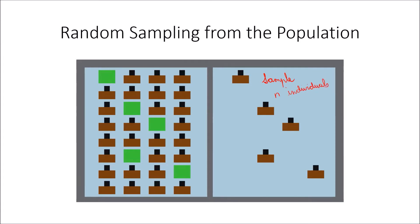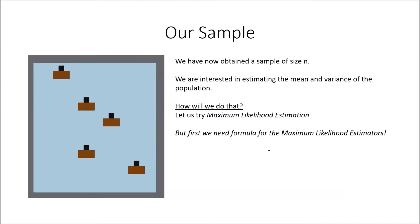Now that we have obtained our sample of size n, we're interested in estimating the mean and variance of the population. There are many ways to do that — for example, sample mean and sample variance. Those are valid estimators, but in this video we are talking about maximum likelihood estimation. So, what are the maximum likelihood estimators for the normal distribution? That's what we're going to derive.